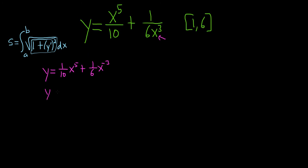Let's take the derivative now, so y prime. Using the power rule, we put the 5 in front: 5 tenths gives us 1/2. Subtracting 1 gives us x to the fourth. Bringing this down gives us negative 3/6, which is negative 1/2. Subtracting 1 gives us x to the negative 4. So you can already see an interesting pattern starting to emerge.